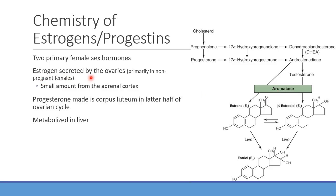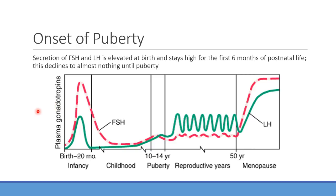The primary estrogen we're producing is going to be secreted primarily by the ovaries in non-pregnant females. A small amount comes from the adrenal cortex, but primarily the ovaries are the big source. Estradiol is the main one produced. Progesterone is made by the corpus luteum and is present in the latter half of the ovarian cycle. These are metabolized by the liver and excreted through the bile. Remember enterohepatic recirculation? This is one of those steroids that goes through enterohepatic recirculation — as it gets excreted from the GI tract, bacteria break it down and you reabsorb it, keeping levels up higher for longer.